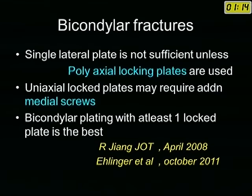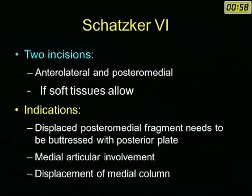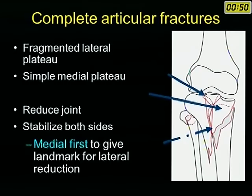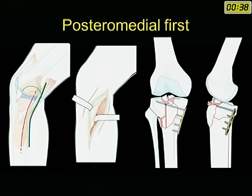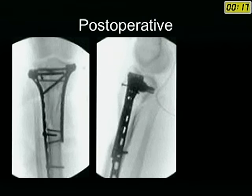Uniaxial locking plates may require additional medial screws, or better still, a plate on the medial side supplemented with screws on the lateral side. Whatever you do, avoid varus as it is just waiting to fail. For Schatzker 6, best evidence supports the two-incision technique provided soft tissues allow. First tackle the medial condyle — reduce it, then build the lateral condyle onto the fixed posteromedial condyle. Use a posteromedial approach, reflect the pes, buttress the posteromedial condyle with a T-plate or similar, then build up the anterolateral condyle through a separate incision.